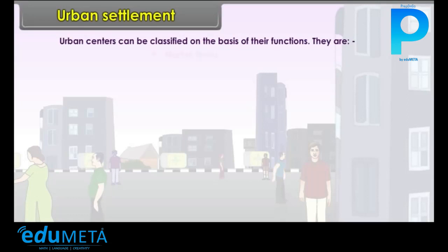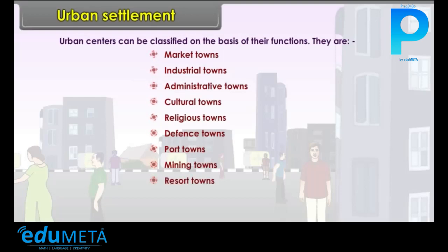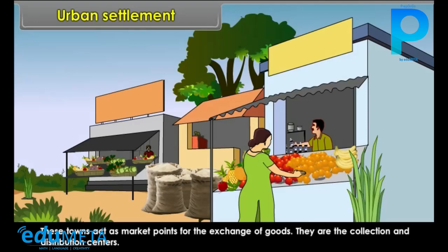Urban centers can be classified as market towns, industrial towns, administrative towns, cultural towns, religious towns, defense towns, port towns, mining towns, resort towns, and residential towns. Market towns act as market points for the exchange of goods. They are the collection and distribution centers.